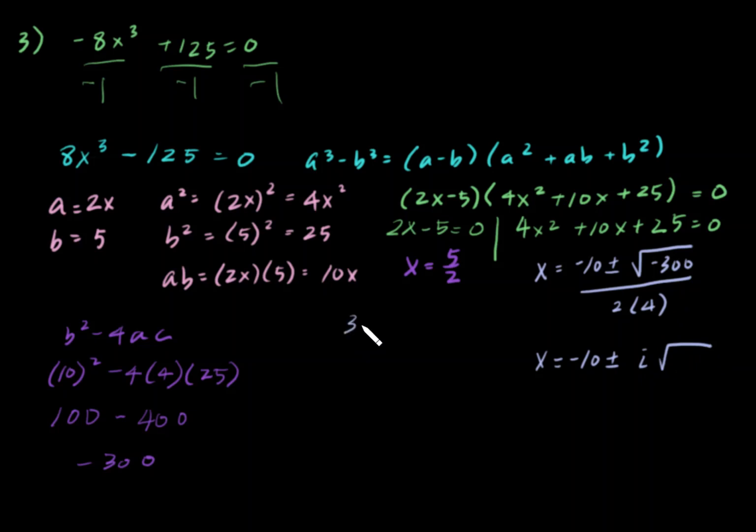300 is made up of 100 times 3. This is made up of 10 times 10. And so, it's 10 times 10 times 3. We don't have to do the prime factorization because we found a perfect square in it. And so, it is negative 10 plus or minus 10i square root of 3 over 8.